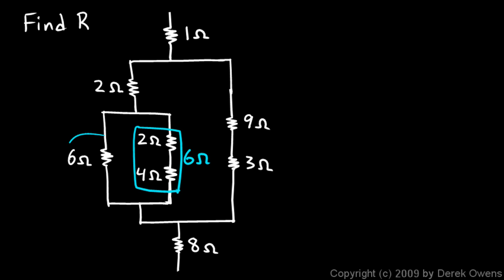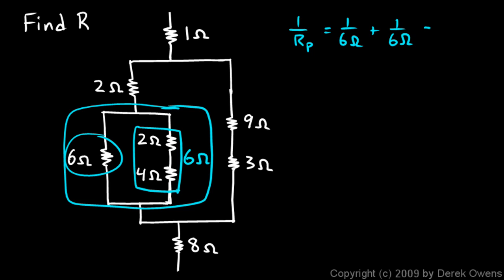And then this 6 ohm and this 6 ohm are in parallel, so let's work that out. 1 over Rp - and I'm calling this section right here the Rp, the parallel section - 1 over Rp is going to be 1 over 6 ohms plus 1 over 6 ohms, and that's obviously 2 over 6 ohms. So Rp will be 6 ohms over 2, which is 3 ohms. So I'm going to write that over here: 3 ohms.